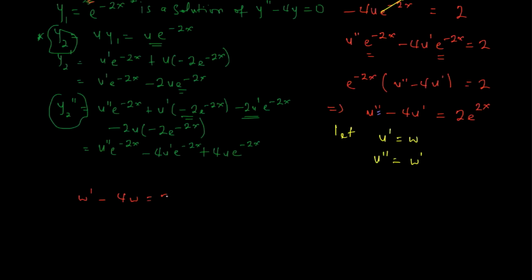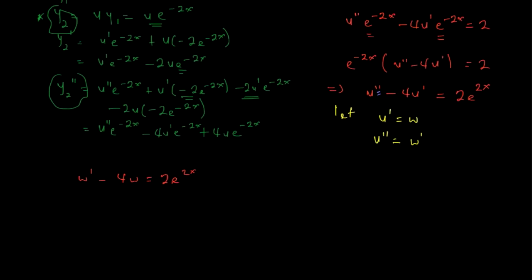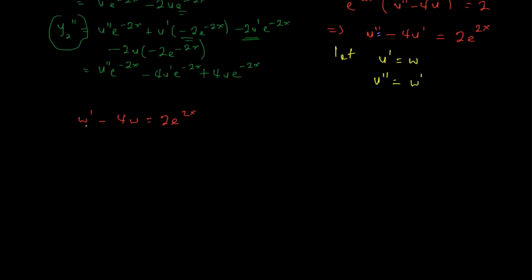This can be written as dw/dx minus 4w = 2e^(2x), which is in the standard form of a linear first-order differential equation. We apply the integrating factor method. Our integrating factor is e to the power of the integral of negative 4 dx, which equals e^(-4x).